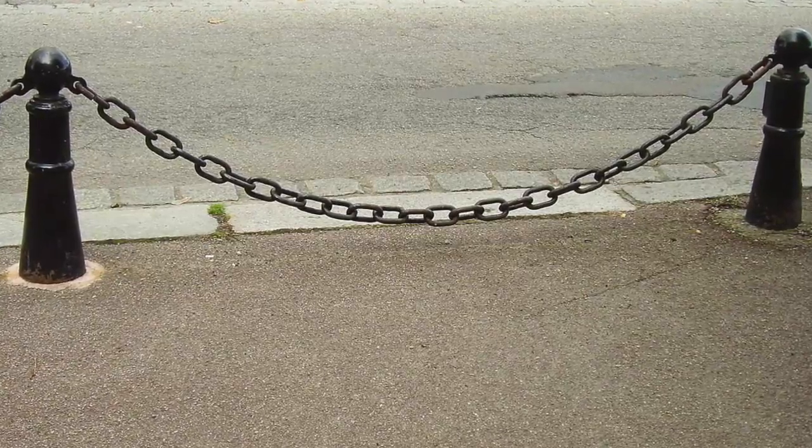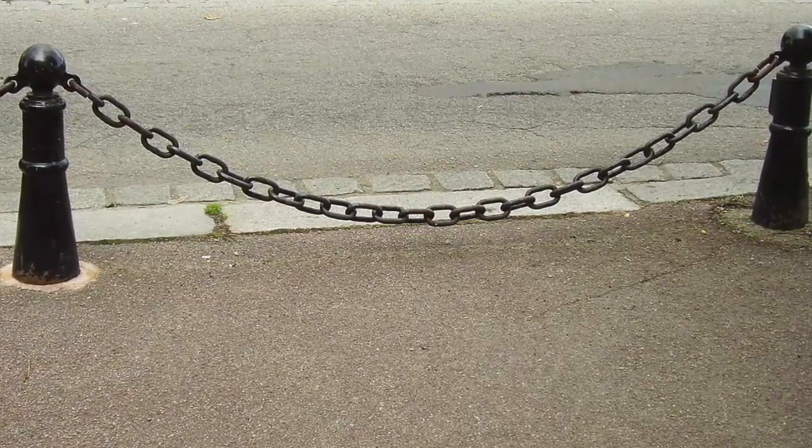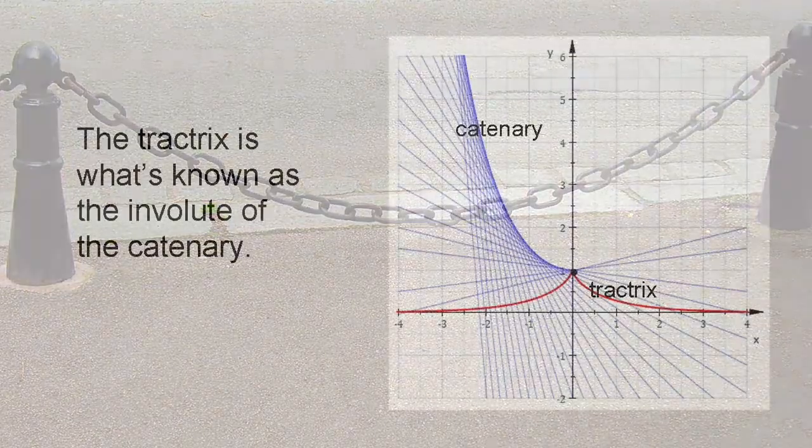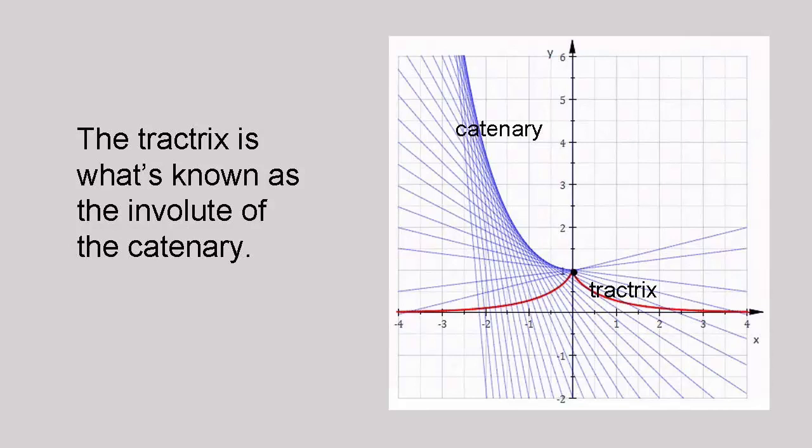A tractrix can be drawn starting from a catenary in a very simple way. Imagine you fixed a piece of string at one end to a point on the catenary. Pull the string out so that it forms a tangent to the curve where it's attached, then wind up the string being careful always to keep it taut. The path followed by the end of the string will be a tractrix.